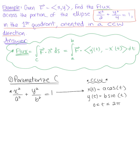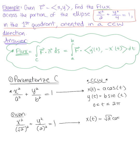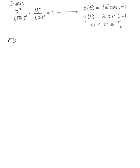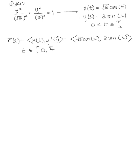Now we apply this specifically to what's given. Our ellipse is x²/2 + y²/4 = 1, which we can think of as x²/(√2)² + y²/2² = 1. So our parametric equations are x(t) = √2·cos(t) and y(t) = 2·sin(t). Since this is restricted to the first quadrant, t ranges from 0 to π/2. So the parameterization vector r(t) = (√2·cos(t), 2·sin(t)) for t ∈ [0, π/2].